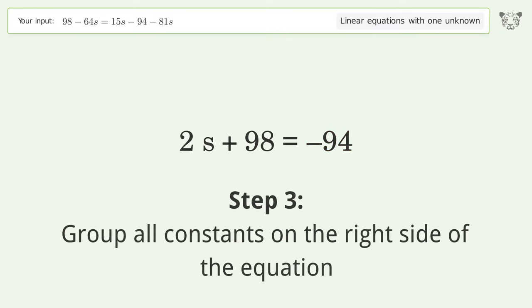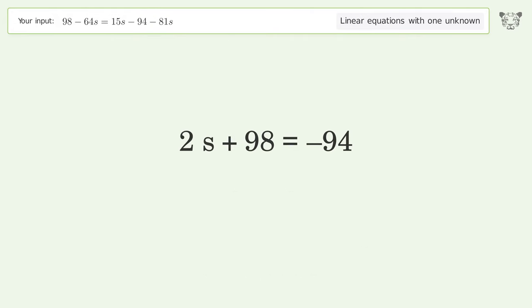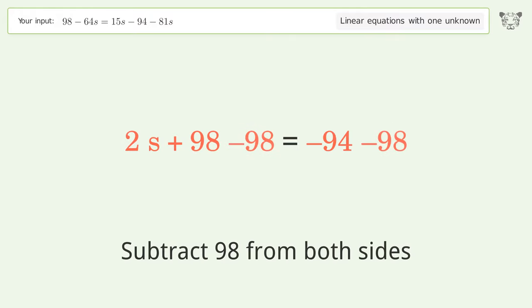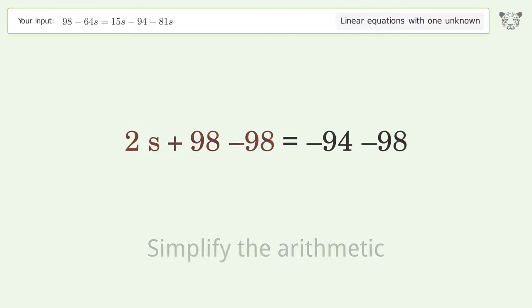Group all constants on the right side of the equation. Subtract 98 from both sides. Simplify the arithmetic.